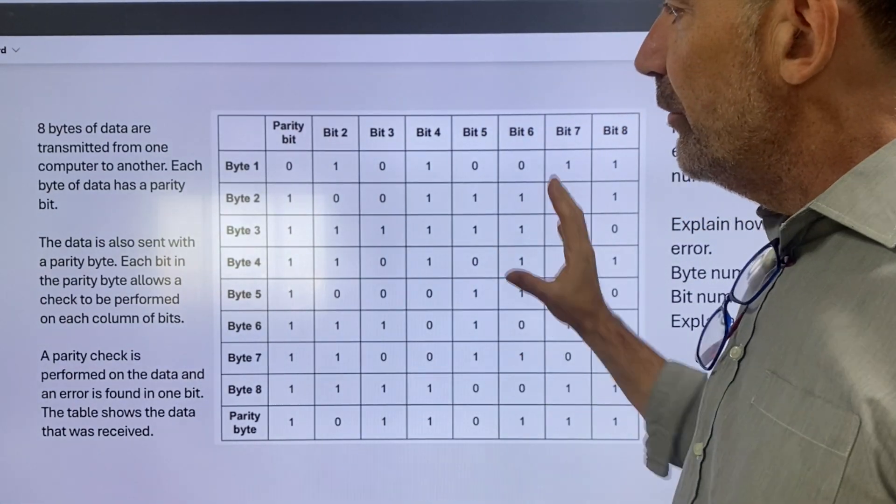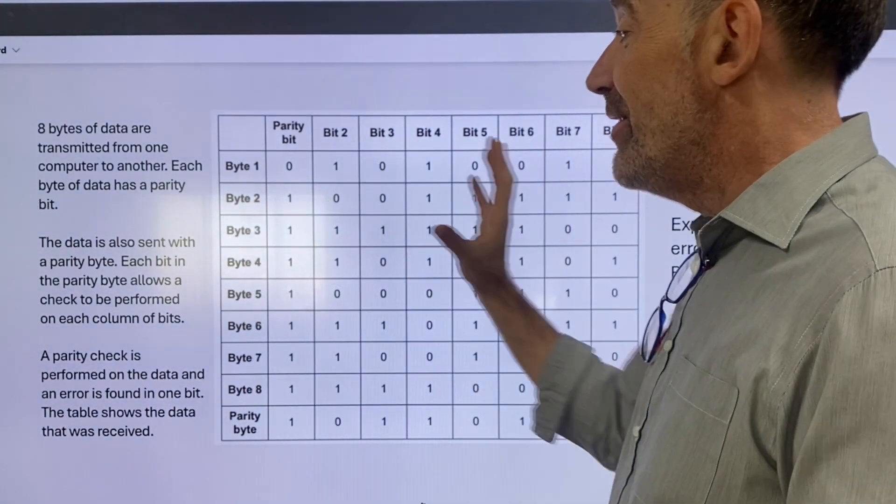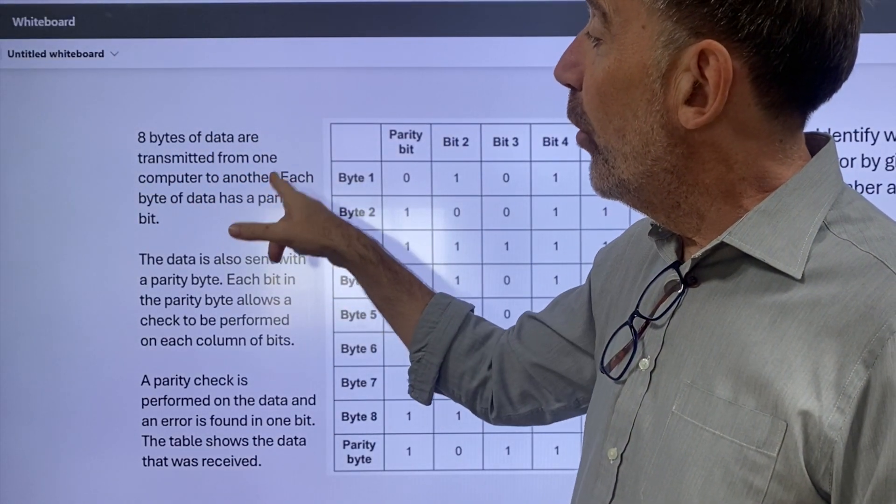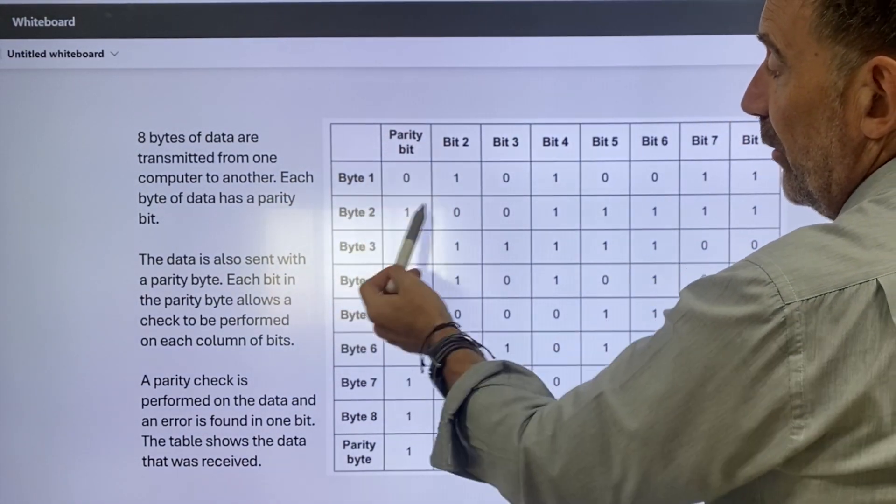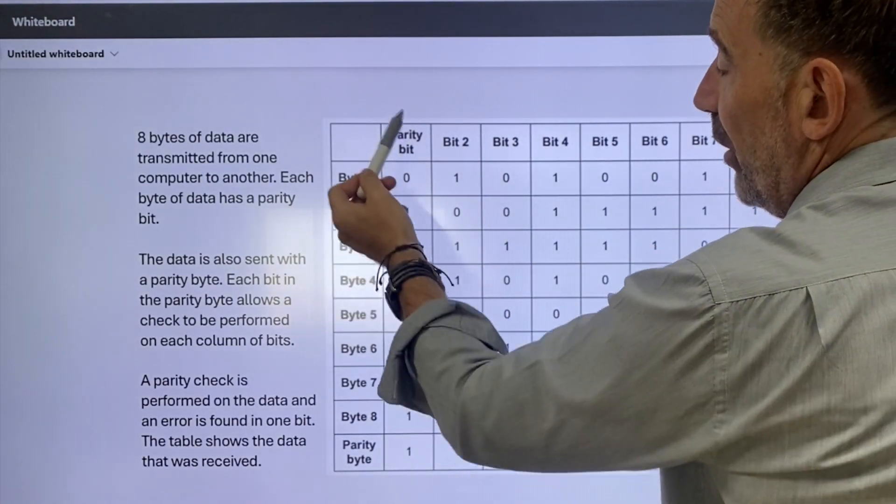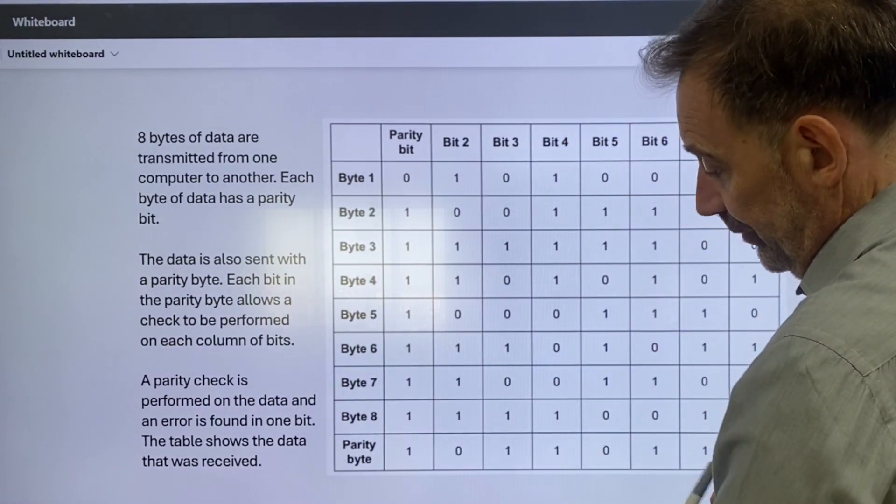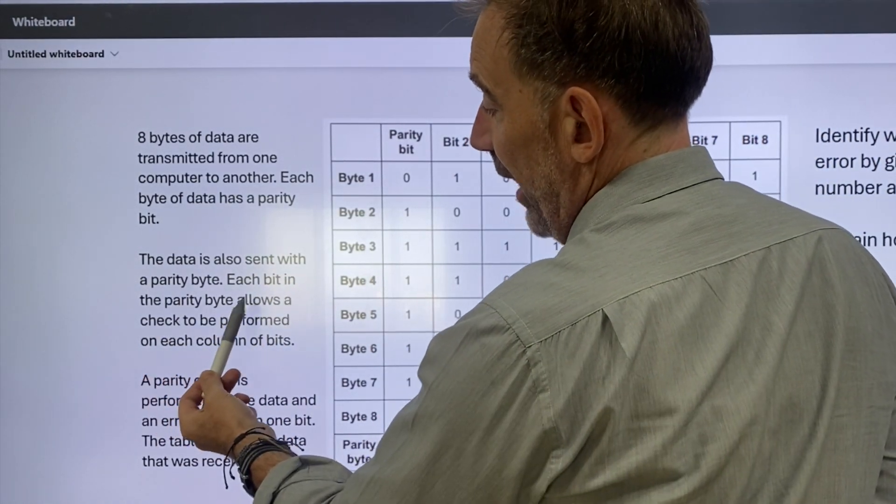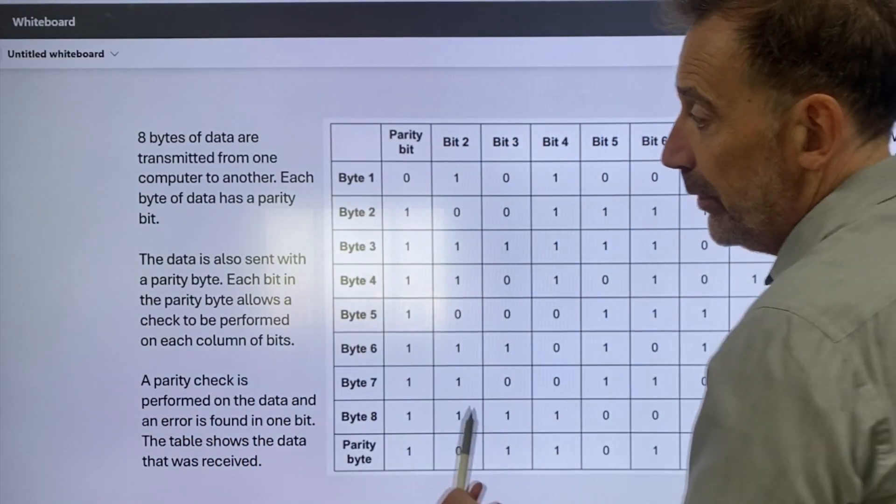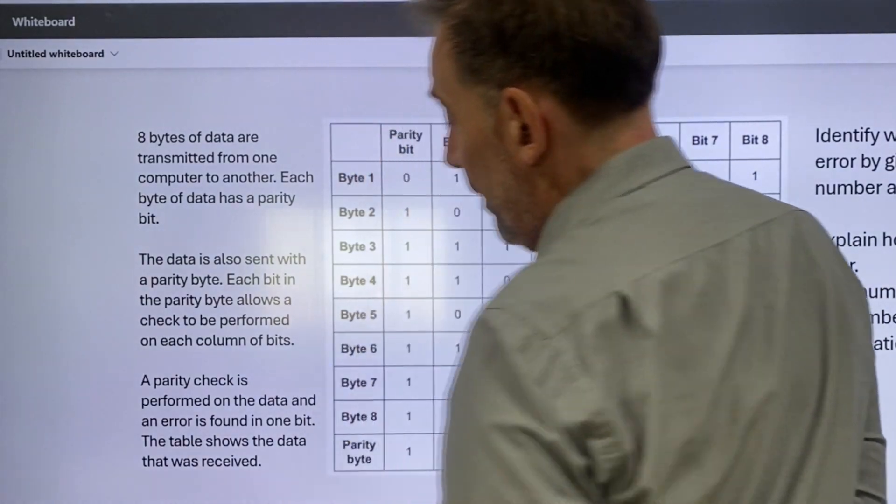So you're usually presented with a table and you've got to identify where there is an error, where an error has occurred within the transmitting of bytes across the network. Eight bytes of data are transmitted from one computer to another. Each byte includes a parity bit. So it includes one, two, three, four, five, six, seven, eight bits in the byte. It also includes a parity bit. The data is also sent with a parity byte. Each bit in the parity byte allows a check to be performed on each column of bits. A parity check is performed on the data and an error is found in one of the bits. The table shows the data that has been received.